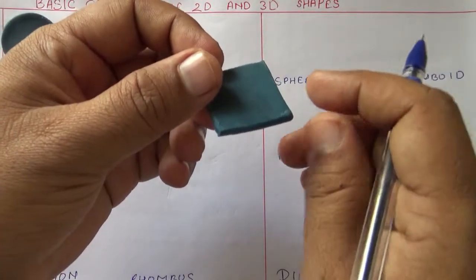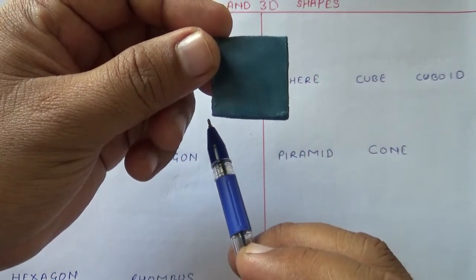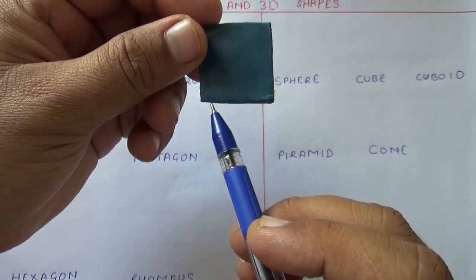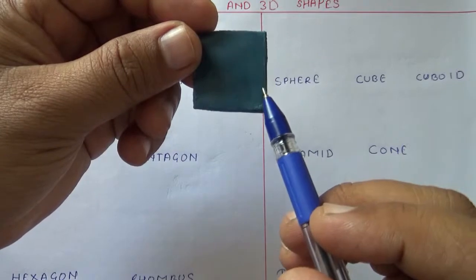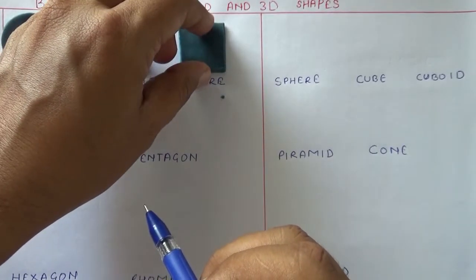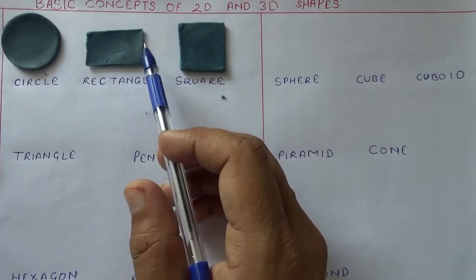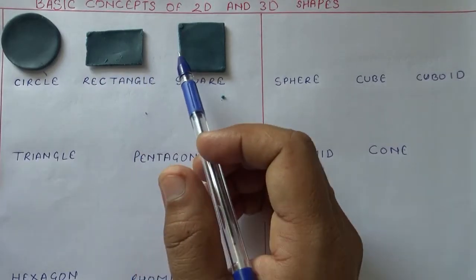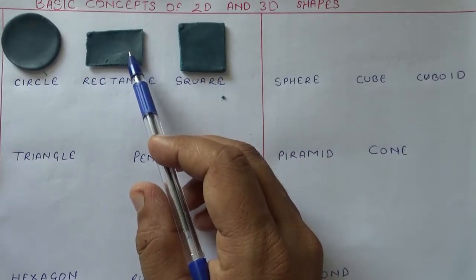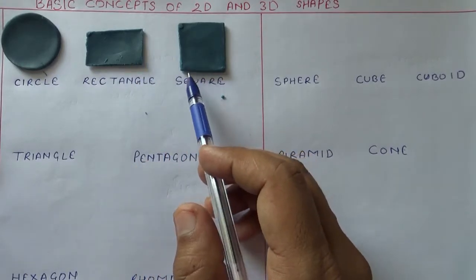Square. A square is a two-dimensional shape which has two sides and both sides are equal. The angle between the two sides is 90 degrees. The difference between a rectangle and a square is that in a square all sides are equal, but in a rectangle there are two different sides — the length is more than the breadth.